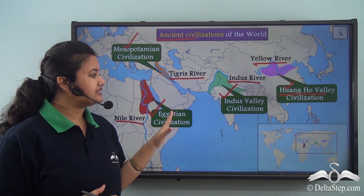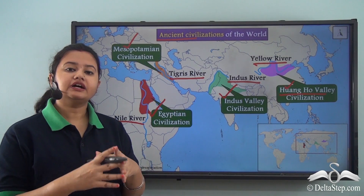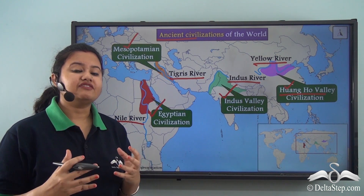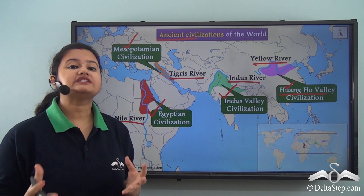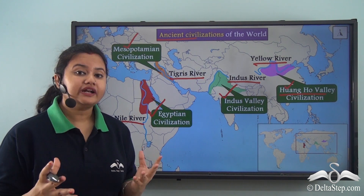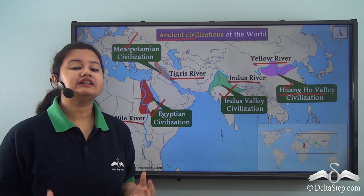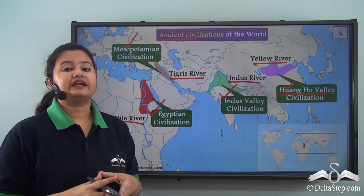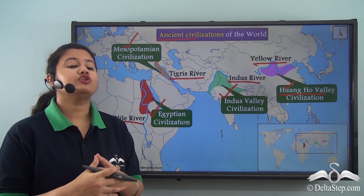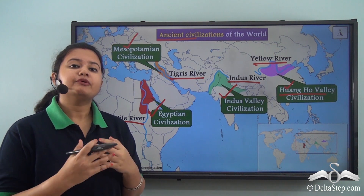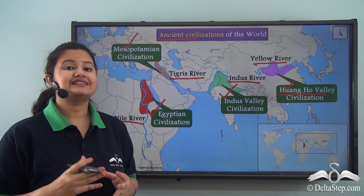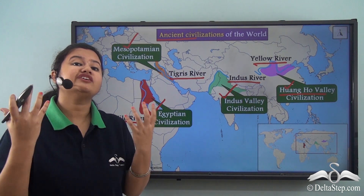The Huangho civilization, an ancient Chinese civilization, developed on the fertile plains of the Yellow River, also known as Huangho River. From this map we can conclude that all of the early civilizations of the world developed on the fertile plains of some rivers. Thus, plains are the cradle of early civilization and they play an important role in the development of human beings.